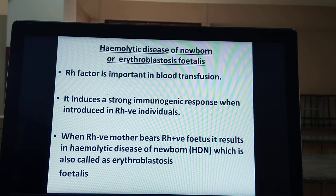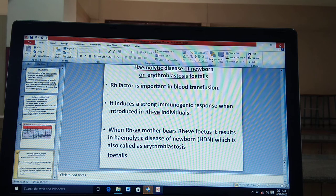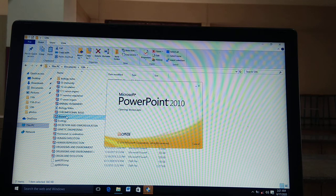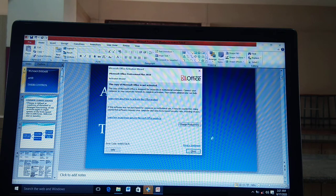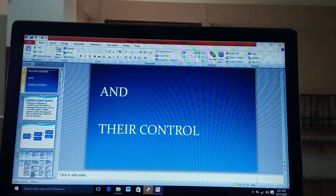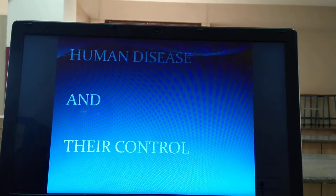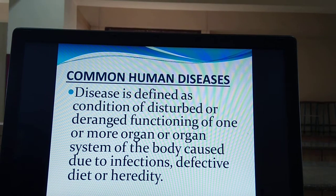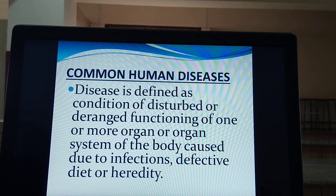With this we come to the end of the first part of human health and disease. The second part is about actual diseases — the different kinds of diseases in human beings. Disease is defined as a condition of disturbed or deranged functioning of one or more organs or organ systems of the body, caused due to infection, defective diet, or heredity.